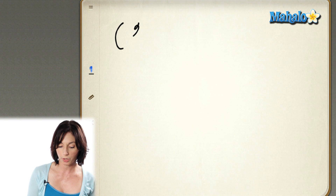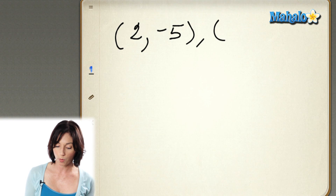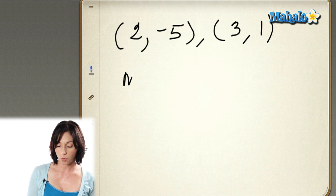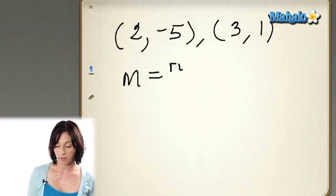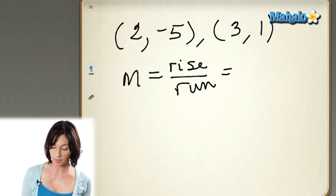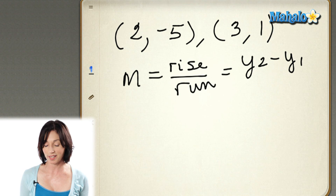Here's how you find the slope of a line. Let's say we have two points: the point (2, -5) and the point (3, 1). Now, slope is rise over run — it's the difference in the y coordinates over the difference in the x coordinates.